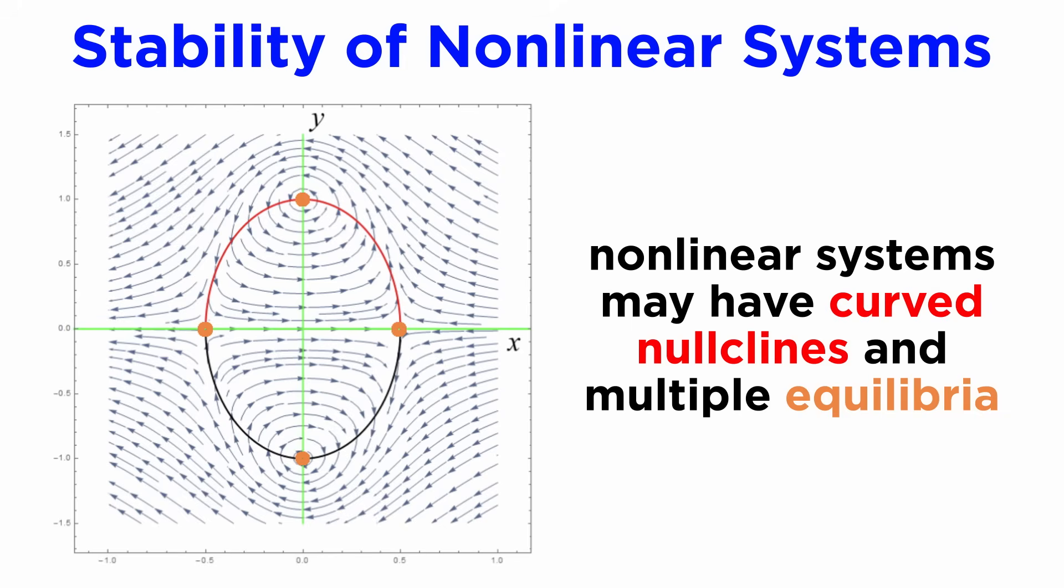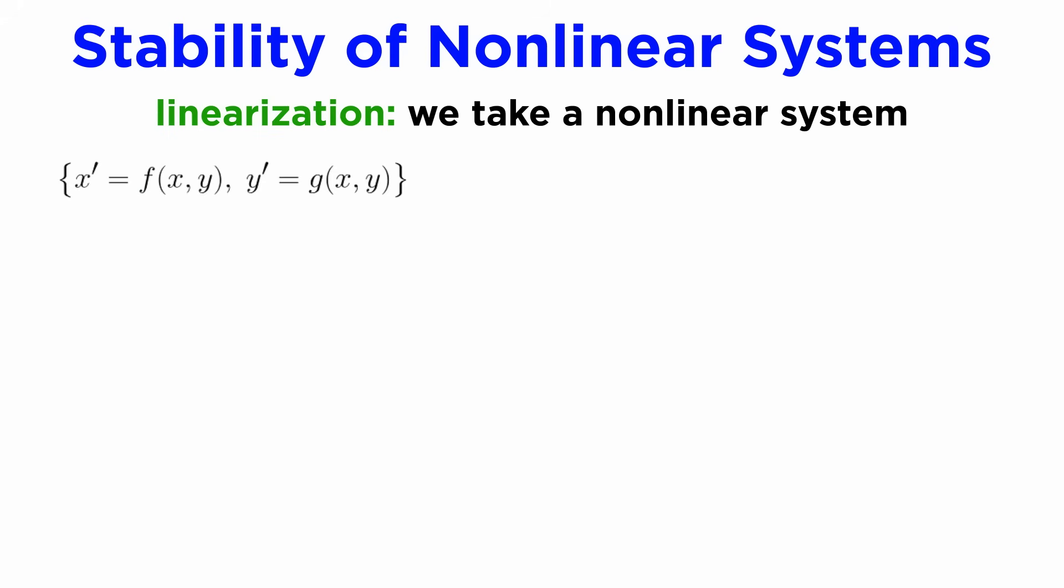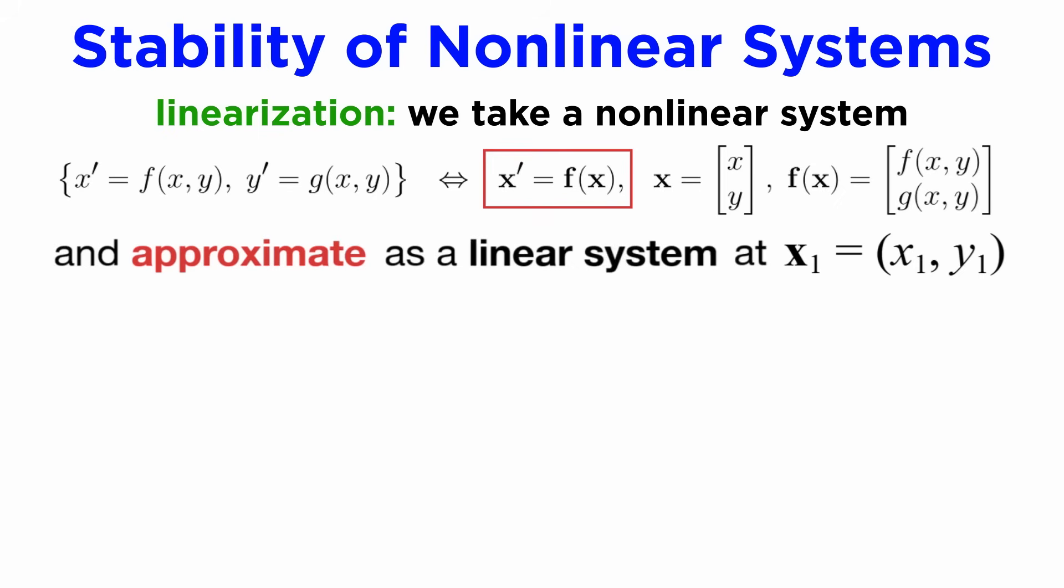For nonlinear systems, the nullclines can be curved, which can produce more complicated dynamics that is often hard to investigate directly. However, given any autonomous nonlinear system of the form x prime equals f of xy and y prime equals g of xy, we can perform an operation known as linearization, which is essentially a linear approximation to our system. Given such a system, we can linearize it about a given point x1y1 to get an effective A matrix, given by the Jacobian matrix of our system, which is essentially the gradient operator from vector calculus, but acting on each component separately.